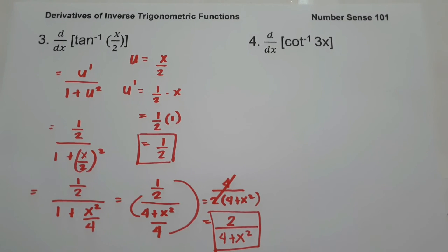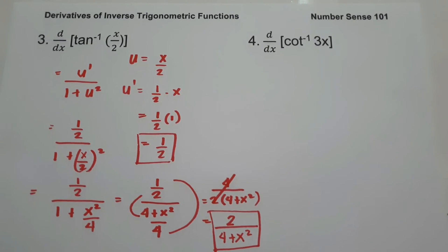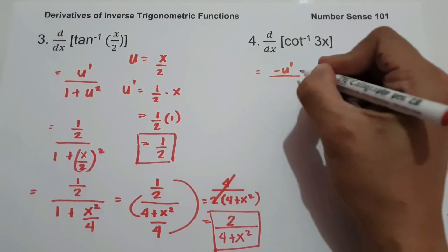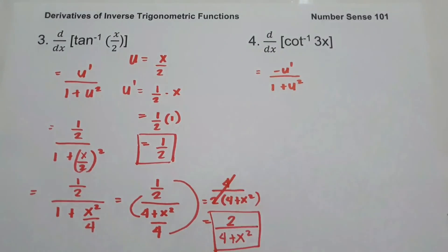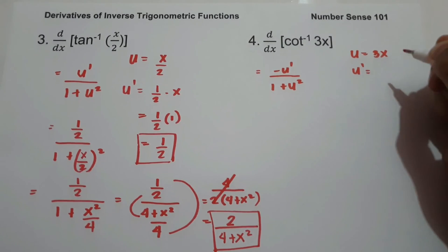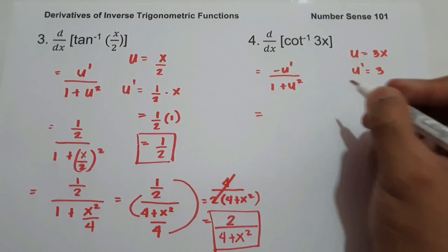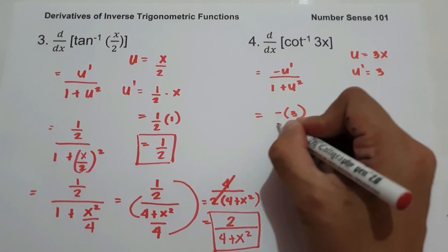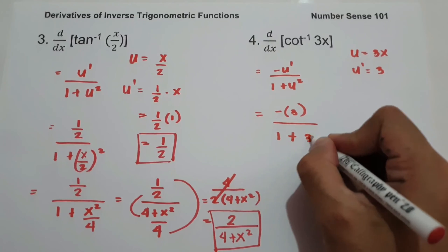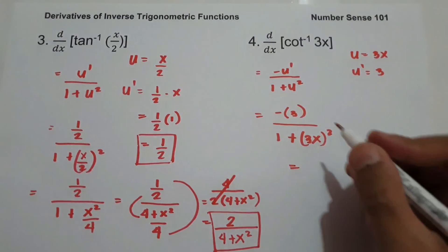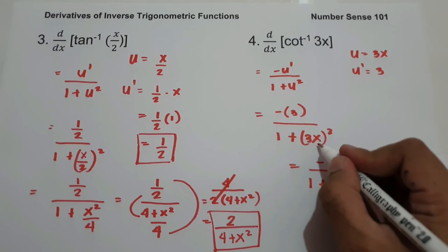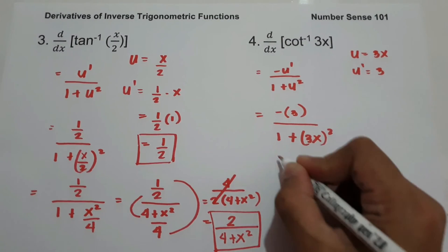On number 4, what is the derivative of arccot 3x? The derivative of arccot u is negative u prime over 1 plus u squared. So let us have the value of u, that is 3x, and u prime — the derivative of 3x — is 3. To simplify, we have negative 3 over 1 plus u squared, where u is 3x, squared. Simplifying: negative 3 over 1 plus 9x squared. And this will be our answer.